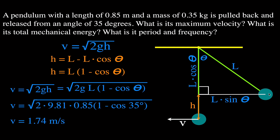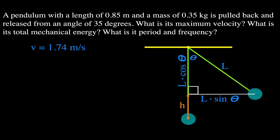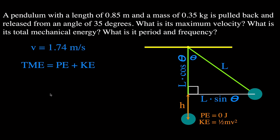That's the maximum velocity. Now we figure out the total mechanical energy. The total mechanical energy of the pendulum is constant at any point and equals potential energy plus kinetic energy. At the equilibrium position, the potential energy is 0 joules because the pendulum is at its lowest position — no height, no potential energy. Therefore, the total mechanical energy equals the kinetic energy, since potential energy is 0.